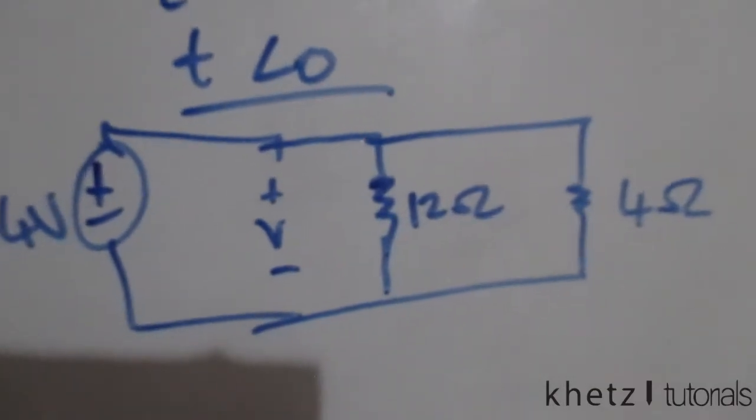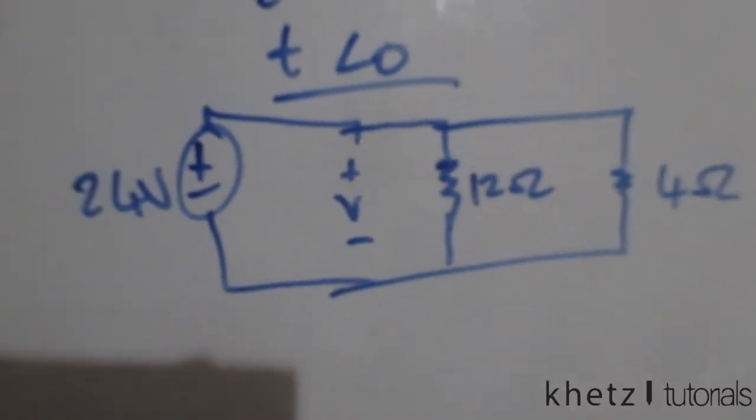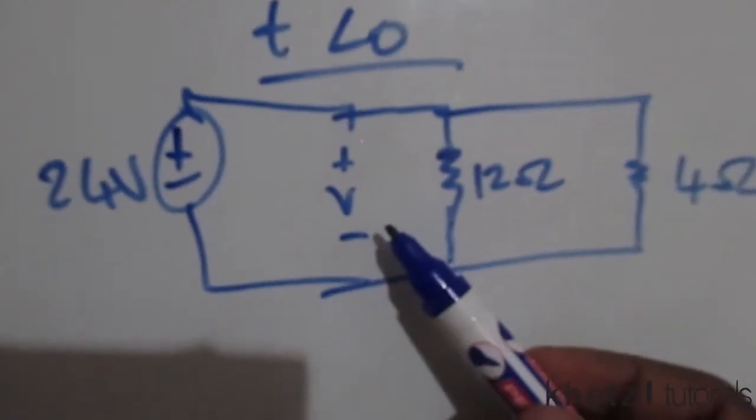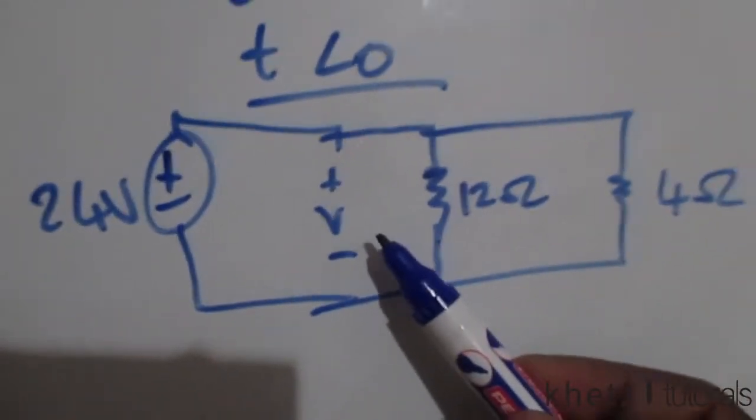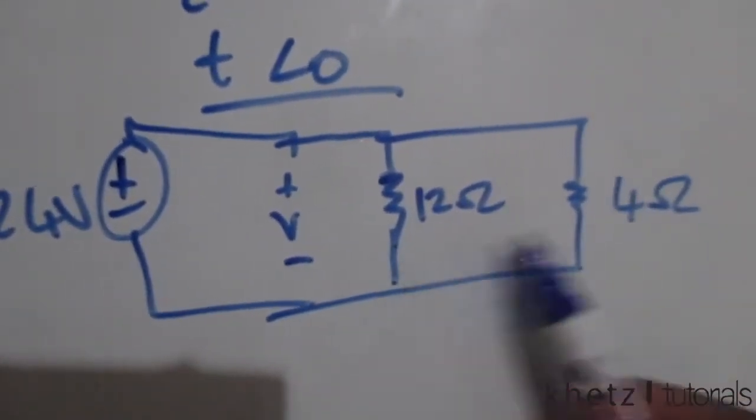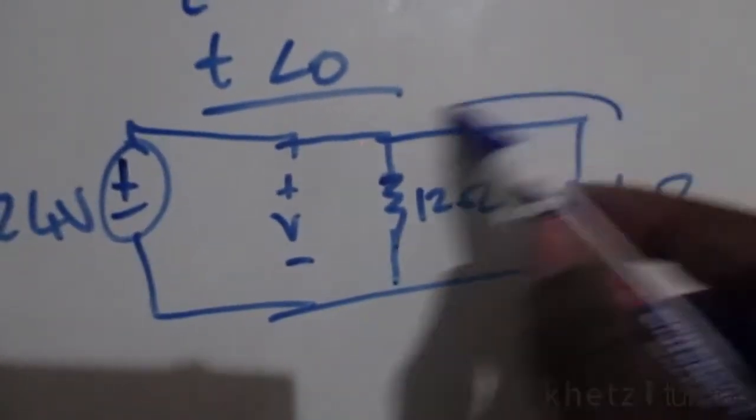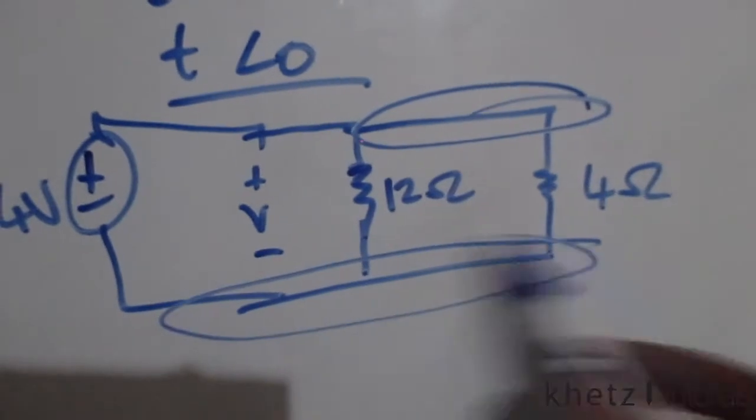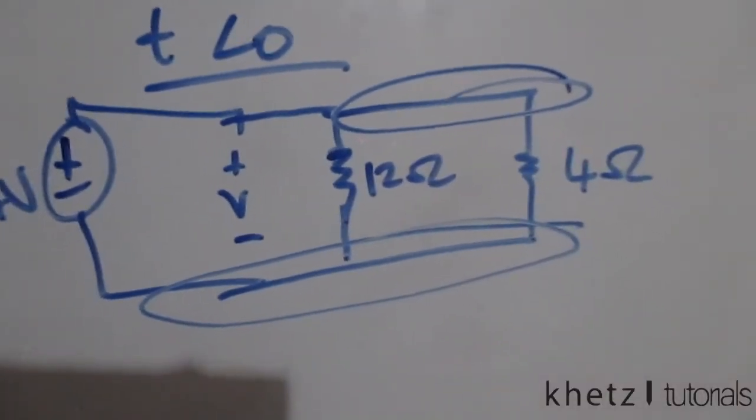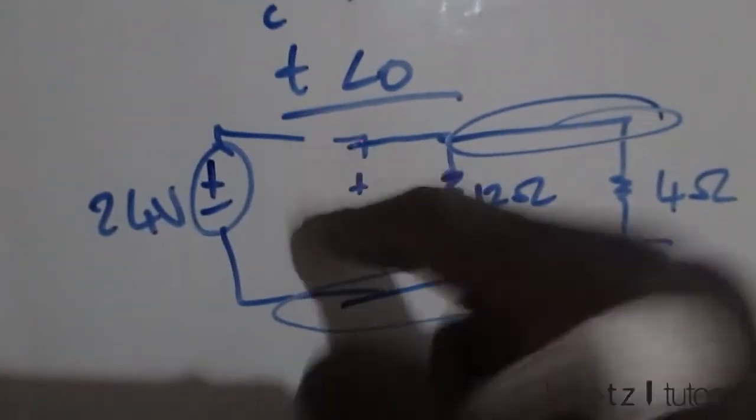This is what we basically have, which tells us that this V, which is the voltage across the capacitor, is the same as the voltage across these two resistor values because this V is in parallel with these two.